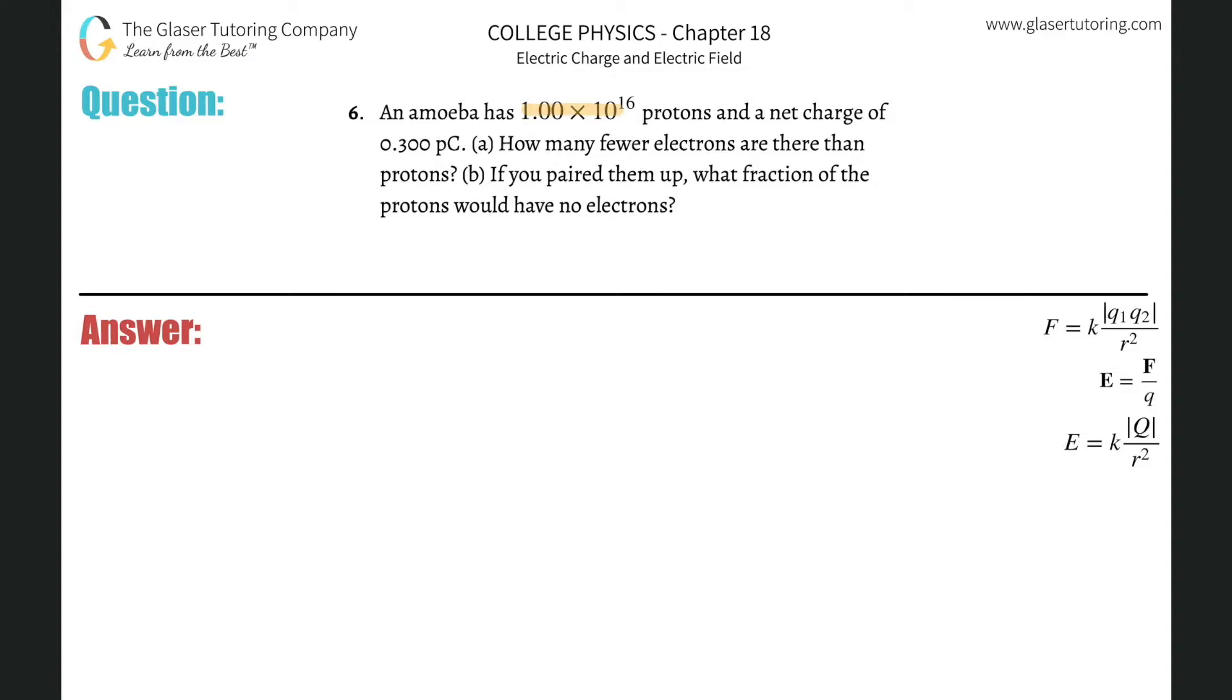Number six. An amoeba has 1 times 10 to the 16 protons and a net charge of 0.3 picocoulombs. Letter A. How many fewer electrons are there than protons?